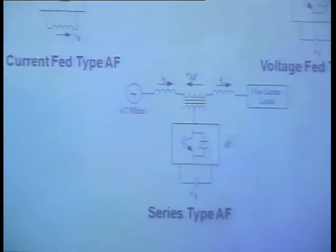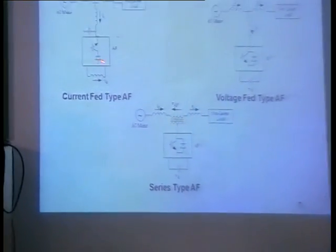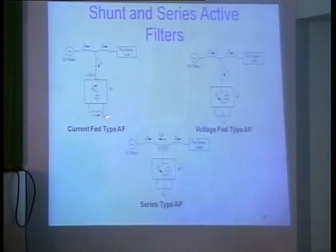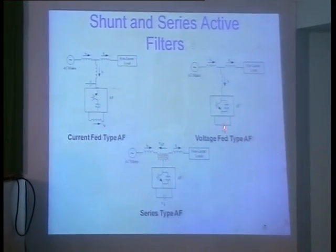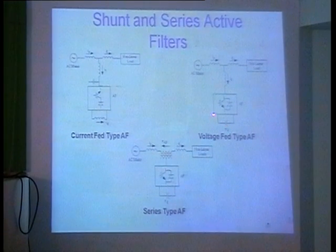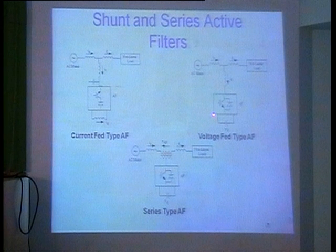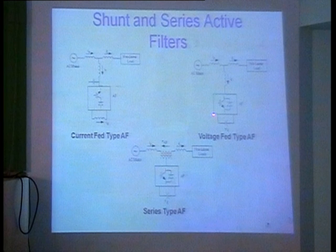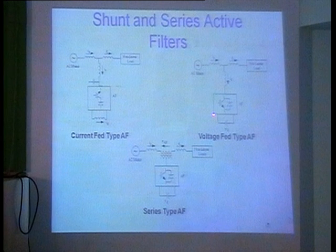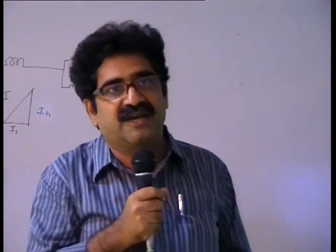For a shunt filter, you have a voltage source type and a current source type. A charged capacitor acts as the voltage source; a voltage source in series with a large inductance acts as the current source. For a series type, voltage is injected in series with the line; for a shunt type, it is connected in parallel. If you have both series and shunt filters, it is called a hybrid filter.